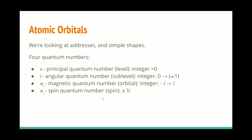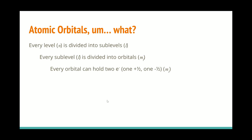You can also think of it as shell, subshell, orbital, spin. I don't really care. But in terms of what these actually represent, every level is divided into some number of sublevels. Every sublevel is divided into some number of orbitals. And every orbital can hold two electrons. One spin up, one spin down.